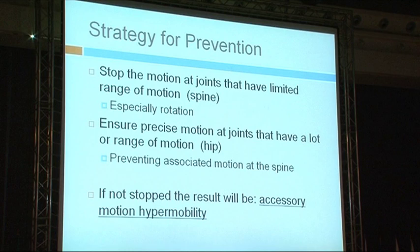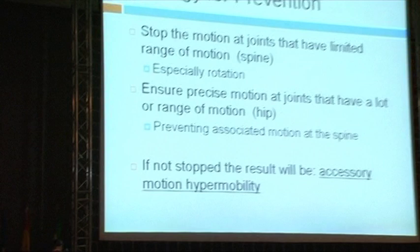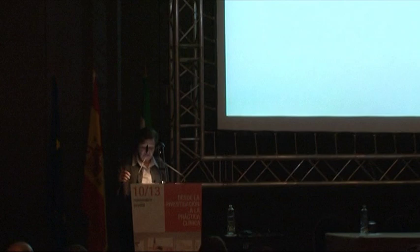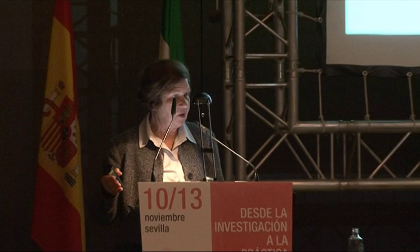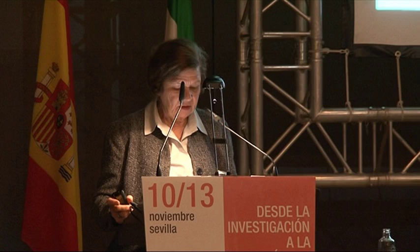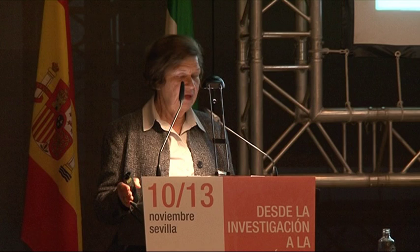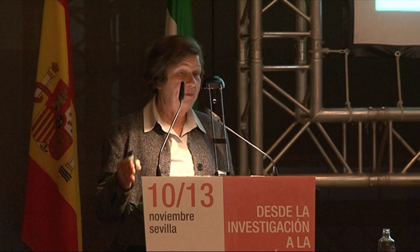The strategy for prevention is to stop the motion at joints that have limited range of motion — particularly stop the rotation — and ensure precise motion at joints with a lot of range of motion. What you really need to stop is accessory motion hypermobility. We only have one to two degrees of rotation at each lumbar segment, except for L5-S1. In this young woman standing in the exaggerated extended position, I simply had her contract her abdominal muscles, and that would take her out of pain and correct her posture.